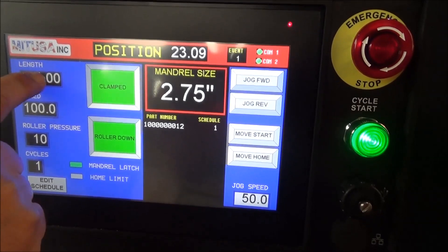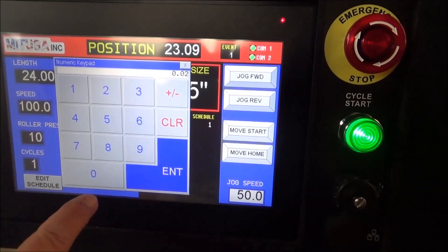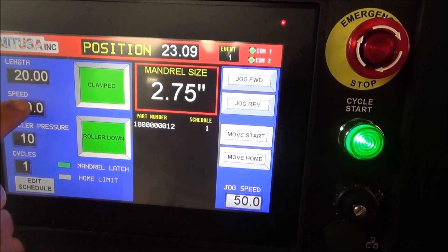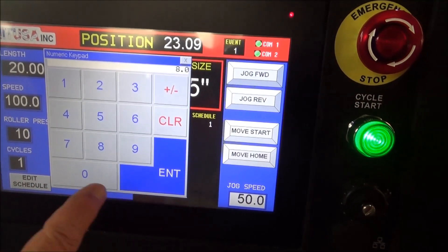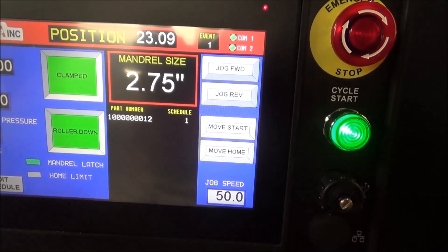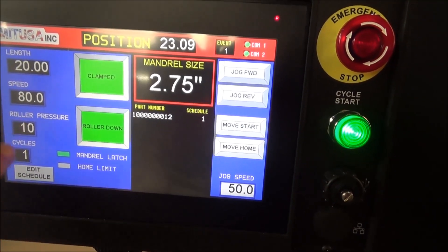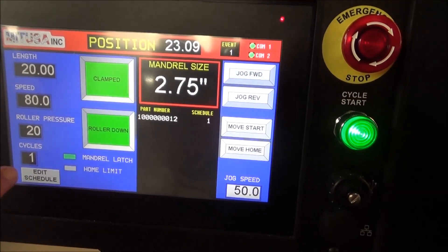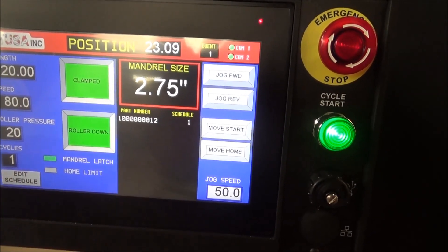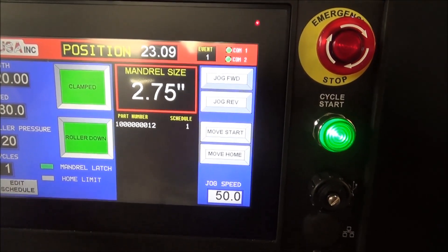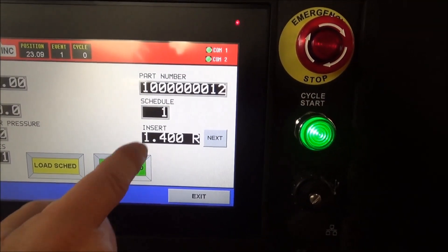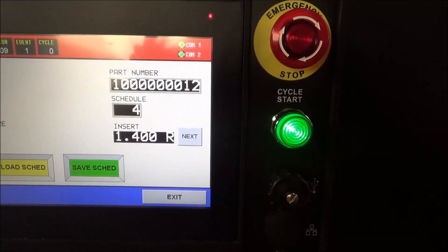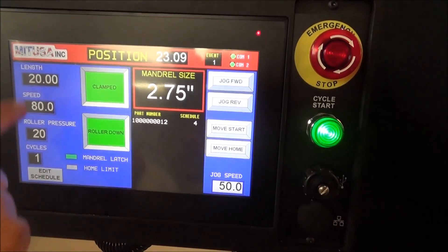Here you can see I can program the length of the part. We'll change it to 20 inches and the speed to 80 inches per minute. The roller pressure I'll change to 20, and then one cycle. I can do various cycles, whatever I want to program. I'll edit the schedule and store this in schedule number four and I saved it. Now I can exit and I'm ready to run that part.